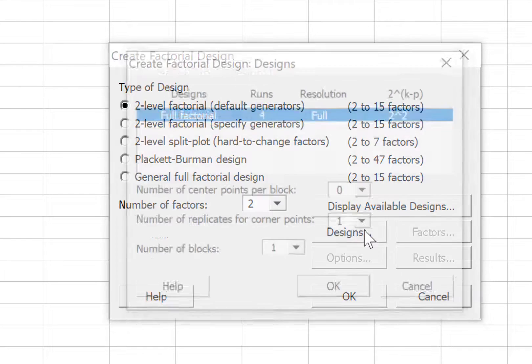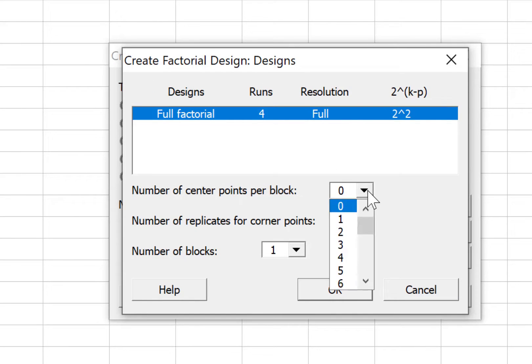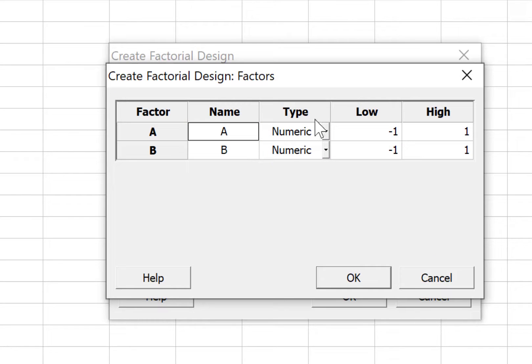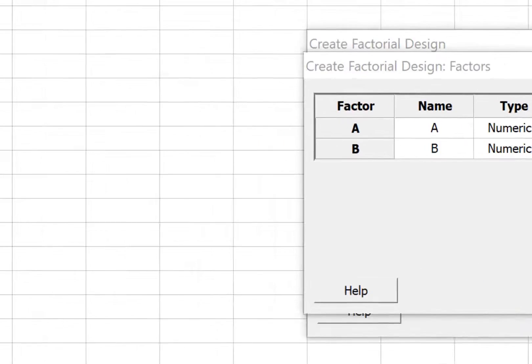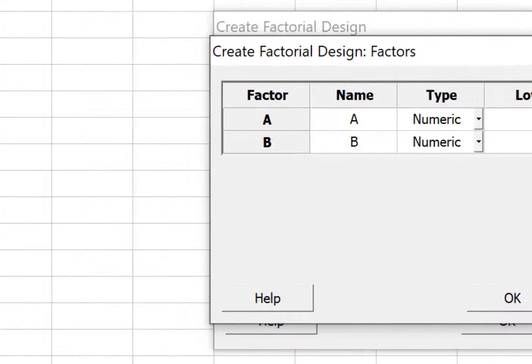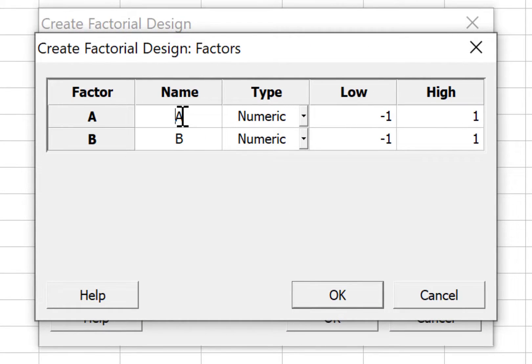In the designs dialog box, we select three center points per block. And number of replicates for corner points, we select two for the two replicates. Number of blocks is only one. In the factors, we enter the factors properties. Like A factor is firing angle and B factor is release angle and the levels. So we enter the factor properties and the levels as shown here.